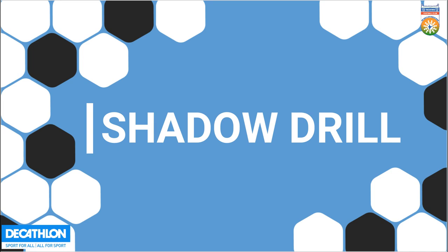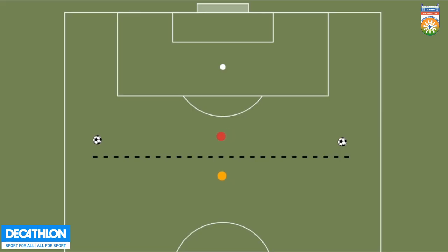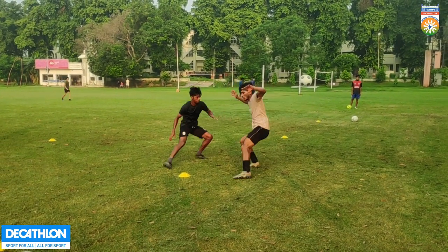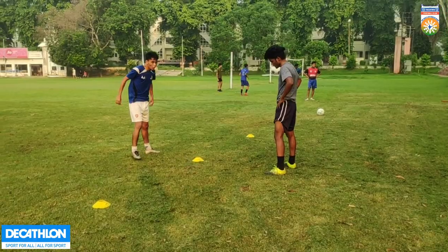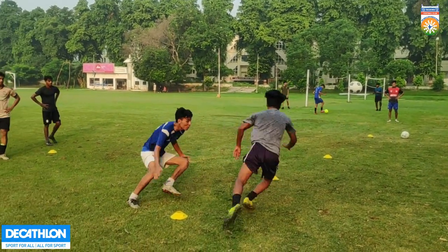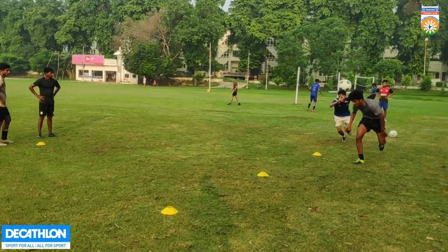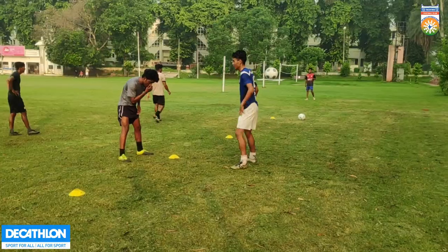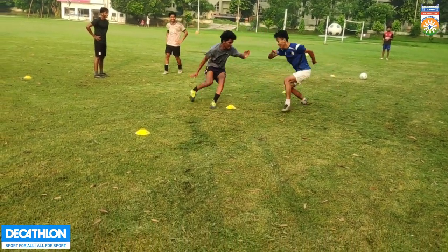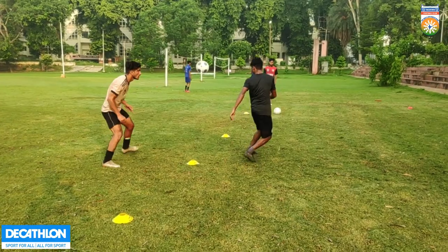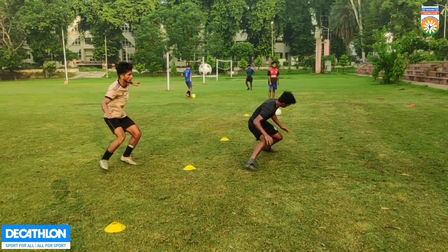Moving towards the next drill, that's the Shadow Drill. In the Shadow Drill, as you can see in the picture, the red person is the leader and the yellow person is the chaser. The red person will give a fake move — a dummy move or a shoulder drop — and the yellow person has to follow them. As you can see, Ankit is giving dummy moves to Priyanshu and was able to dodge him. Shikar is also giving a dodge to Thapa and was able to do that. This is basically a match-related drill. We usually see this in match situations where a player follows the opponent, and this helps the player read the pattern of the opponent.